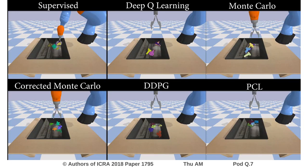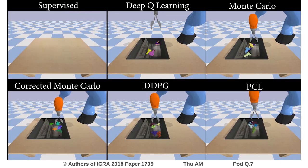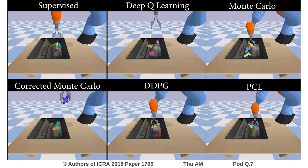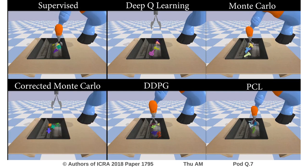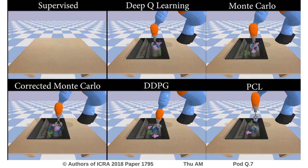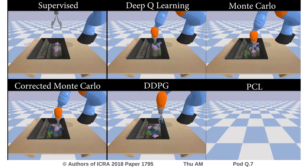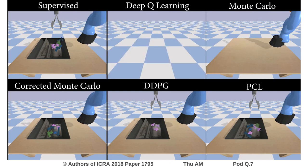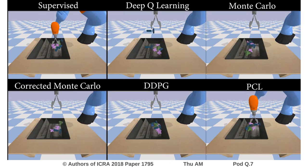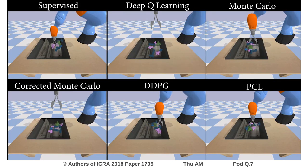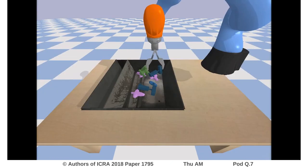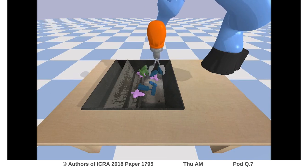The use of pixel observations and a diverse set of training objects allows the robot to grasp objects not seen during training, as well as grasp specific objects from the bin. Reinforcement learning enables us to learn complex manipulation strategies from data, such as extracting a target object from underneath clutter.